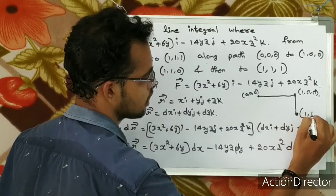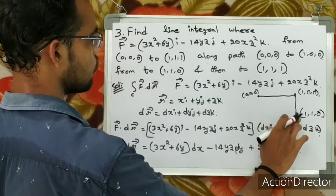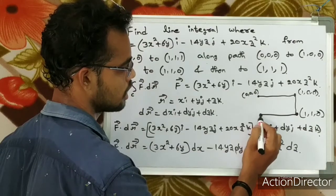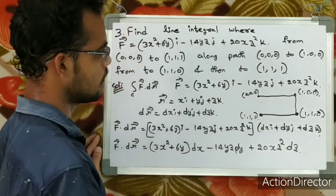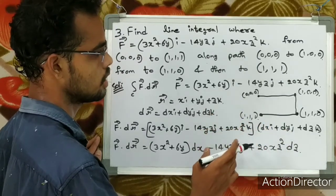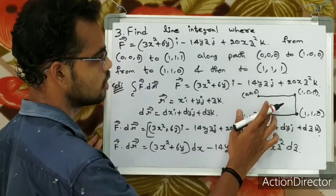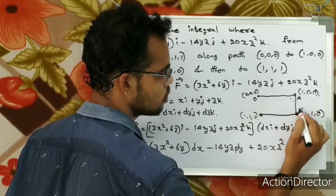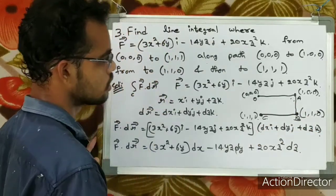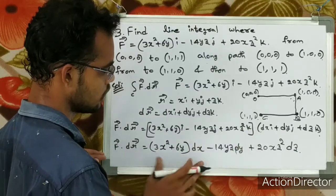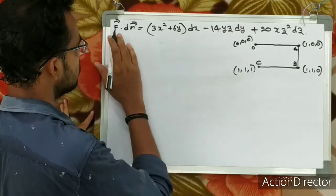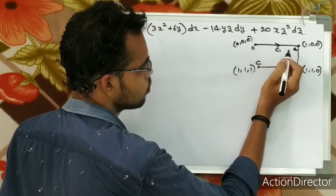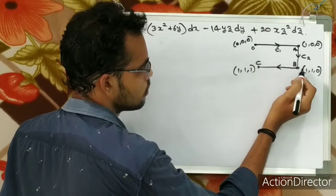I will draw this diagram. This is the path in the x-axis direction. Here is curve C1, and curve C3. The three segments of the path are labeled C1, C2, and C3 in the diagram.